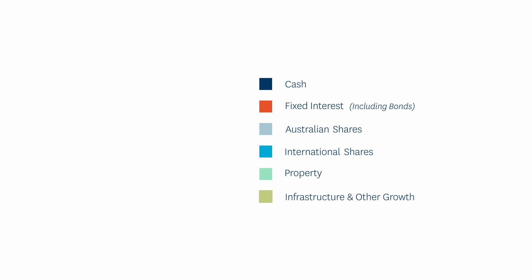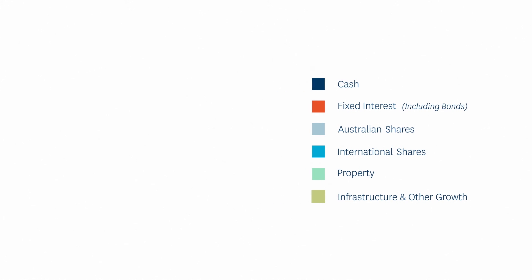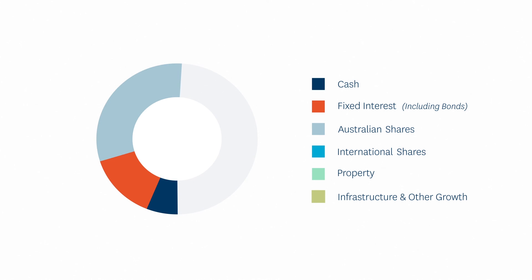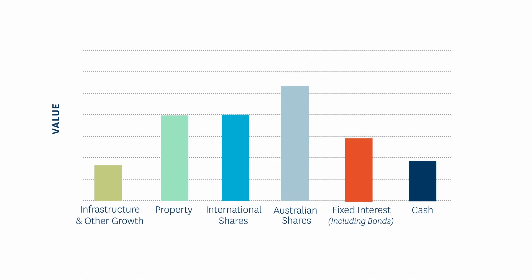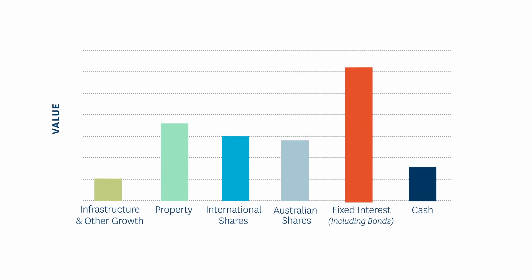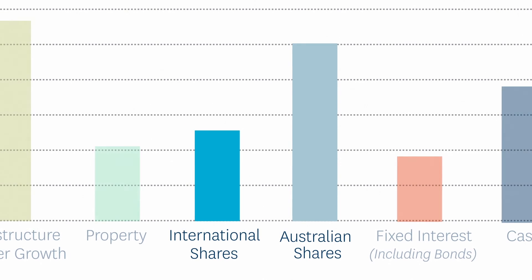There are six key asset classes you can invest in: cash, fixed interest including bonds, Australian shares, international shares, property and infrastructure. These asset classes can move in different directions at different times, so if your portfolio is diversified across a number or all of these areas, unpleasant movements in one may be offset by positive results in another.